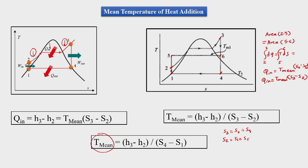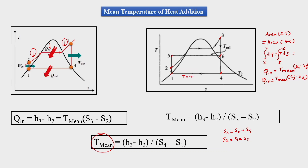In finding the mean temperature of heat rejection, the calculation is simpler. In process 4 to 1, although it is an isobaric process, it is also a phase change process, so temperature is constant throughout. If the temperature varied, we would evaluate it by the same method used for the heat addition process.